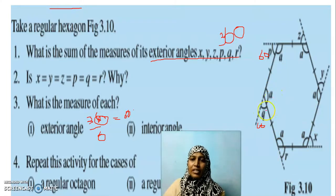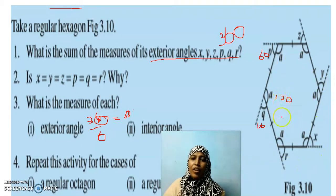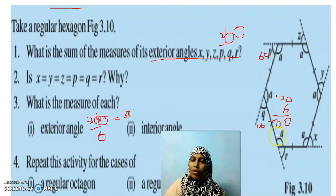So what about the interior angles? 180 minus 60 — what is 180 minus 60? It is 120. So all the interior angles here are going to be 120. If I add all these 120 six times, what will I get? 720. So the sum of interior angles in a hexagon is 720 — our answer is confirmed.